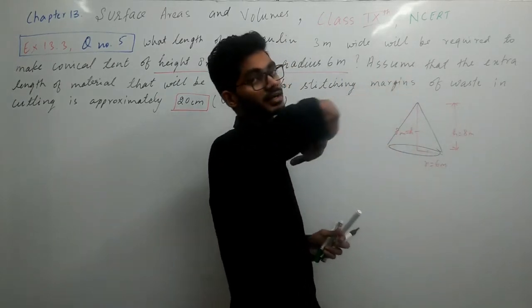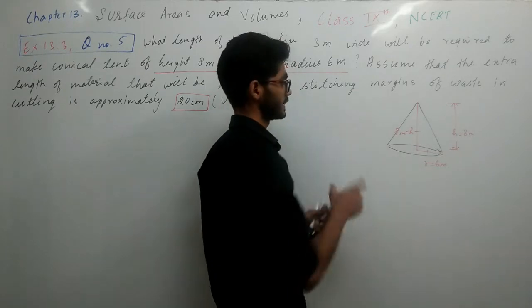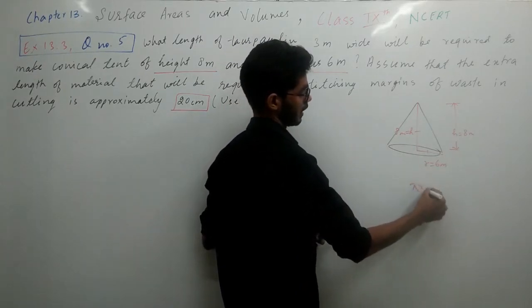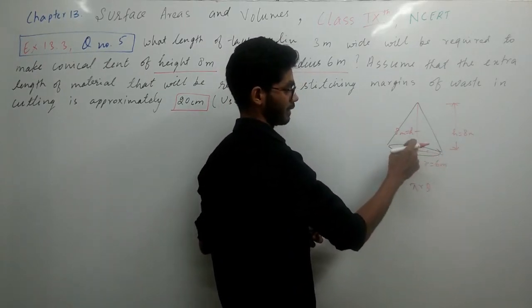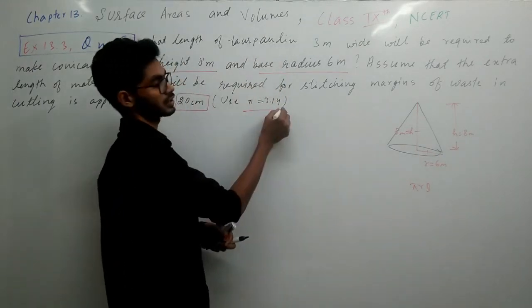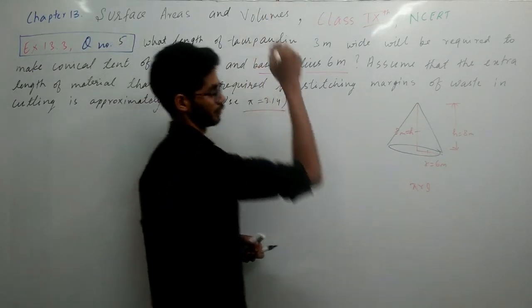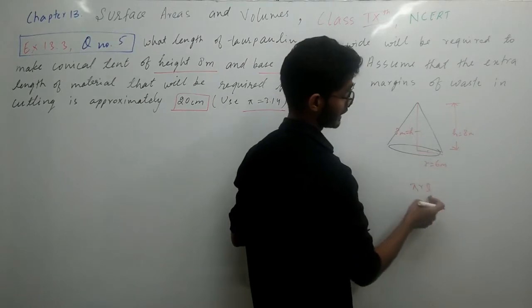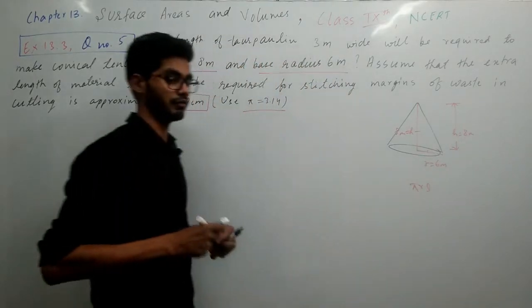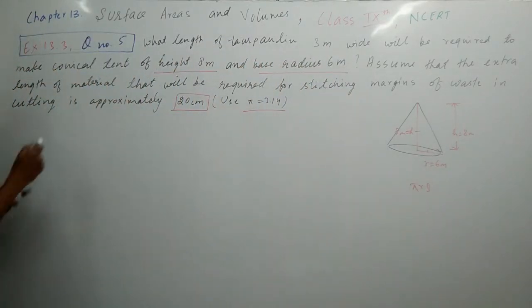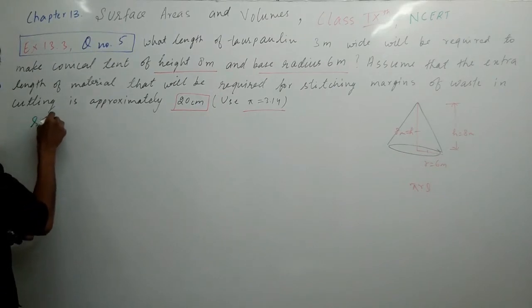This is the curved surface area. Curved surface area formula is Pi r l. Pi value is 3.14. Radius value we have, but slant height is not given. So let's see the solution.